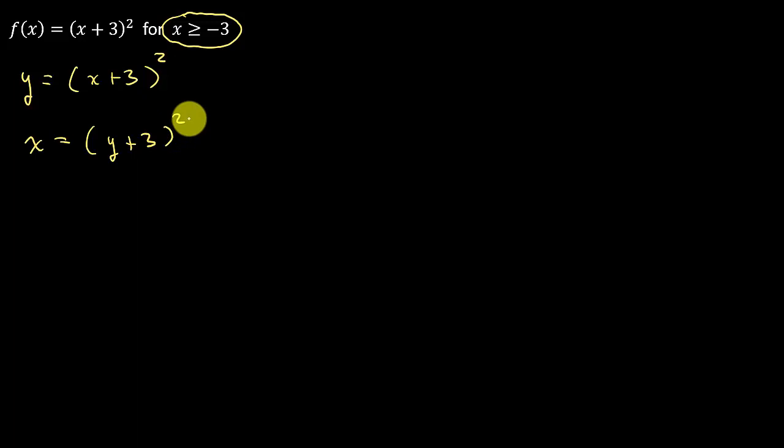so that's x is equal to y plus 3 squared. And then we have to do what? Well, we solve for y, so we need to take the square root of both sides because we have this squared term here. So that's going to give me y plus 3 is equal to the square root of x.